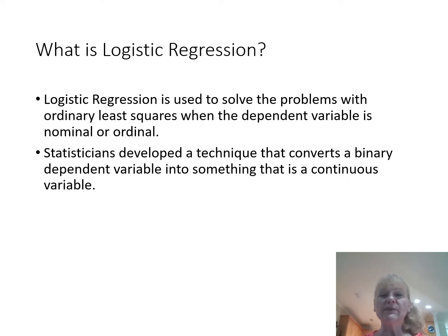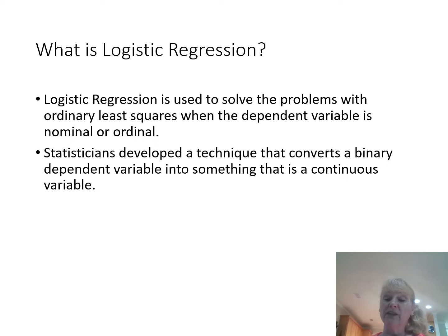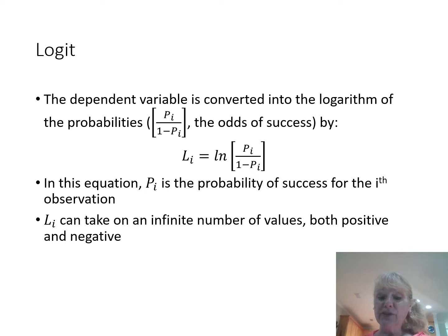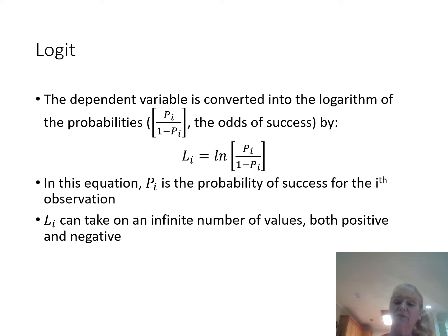Logistic regression is going to find a way to use ordinary least squares analysis like we did in regular regression, but for a nominal variable. JMP is going to do the conversion for us — it will change that nominal variable into a continuous variable. The dependent variable is converted by taking the logarithm of the probabilities of a success. So if we say somebody purchases our product, that will be the success, and the sum of those probabilities and their logarithm will be the new variable that we'll predict.